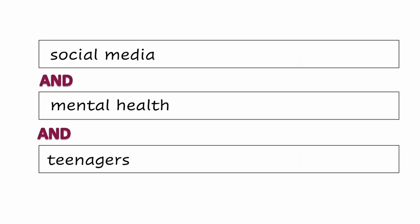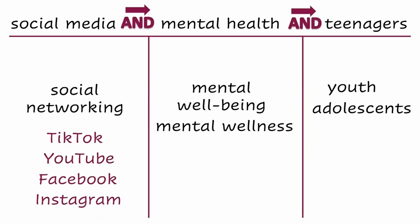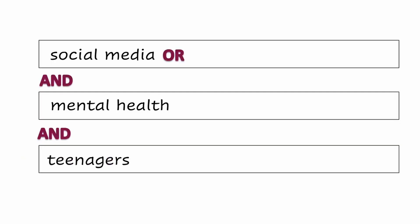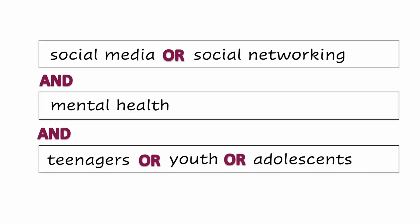If we stopped here, this is what our search statement would look like. But let's go back to our keyword brainstorm table and see if we want to bring in any of our keyword alternatives. Because the keywords listed under each original keyword are synonyms, we might want to add some of them to our search statement using OR. Let's add the synonym for social media — 'social networking' — and the synonyms for teenagers — 'youth' and 'adolescents.' Because these are synonyms, we add them to their matching original keywords with the Boolean operator OR. So now our search statement looks like this.